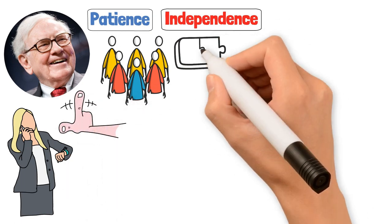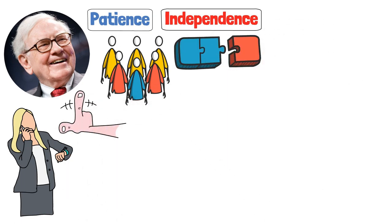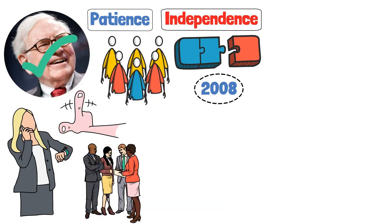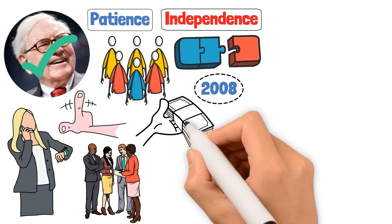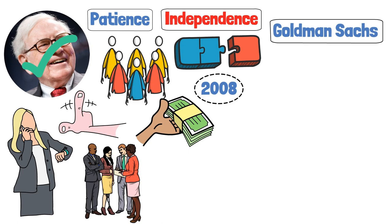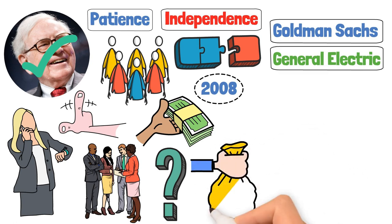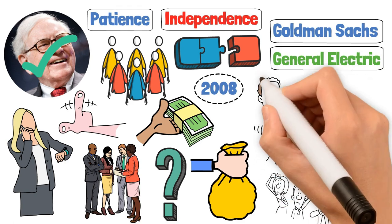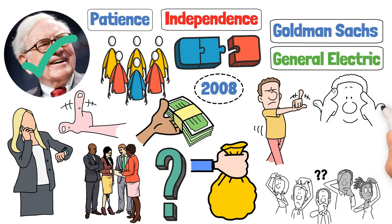Let's break it down with some real life data. Did you know that during the 2008 financial crisis, when most investors were running for the hills, Buffett was buying? He invested billions in companies like Goldman Sachs and General Electric, companies he knew were solid. And guess what? Those investments paid off big time. That's the power of being greedy when others are fearful. It's not about being reckless. It's about being confident in your analysis and understanding of the value.